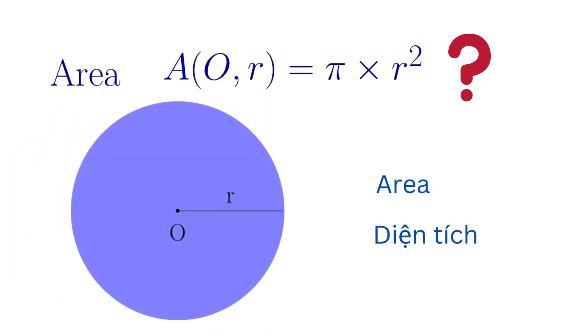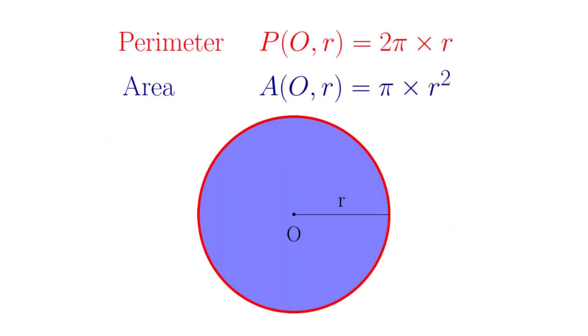And why does the area of the circle equal π times the square of its radius? We are going to answer these two questions in this video.